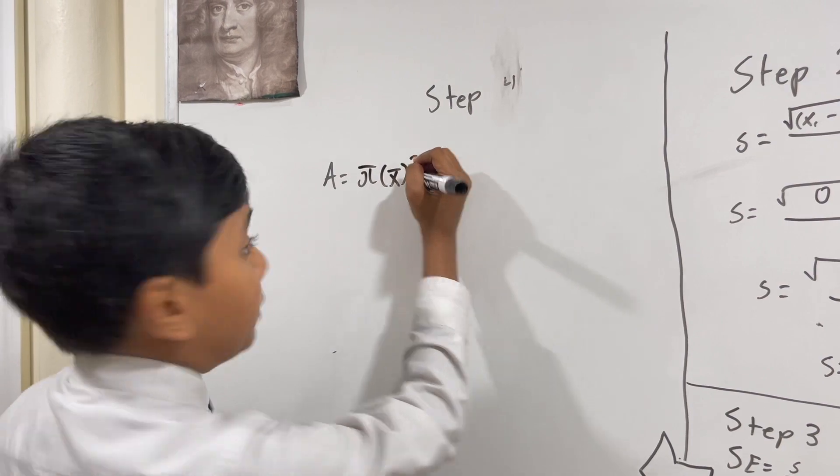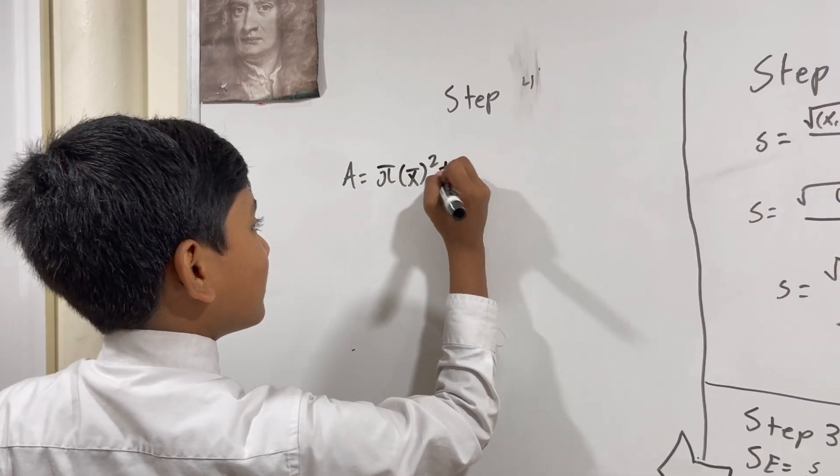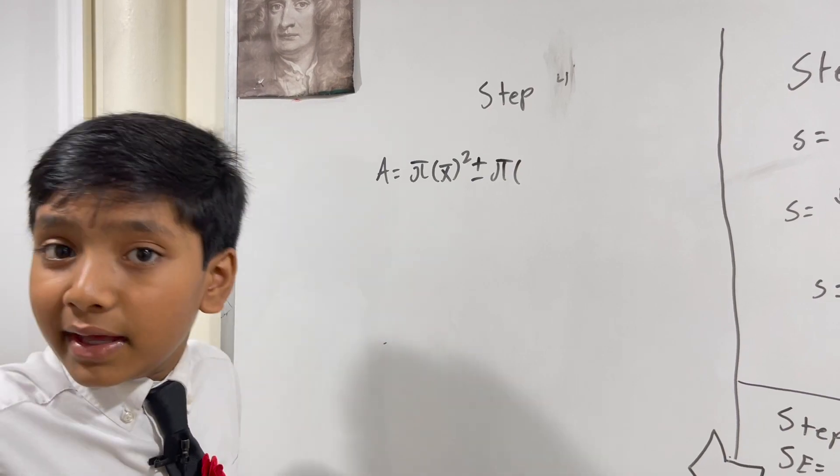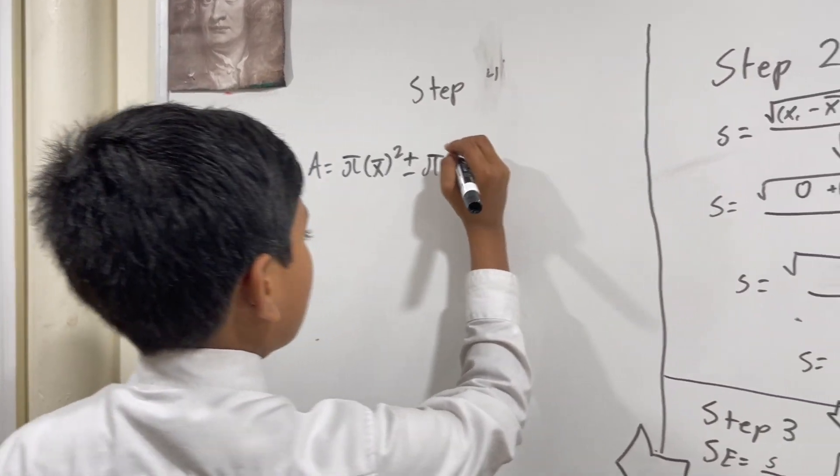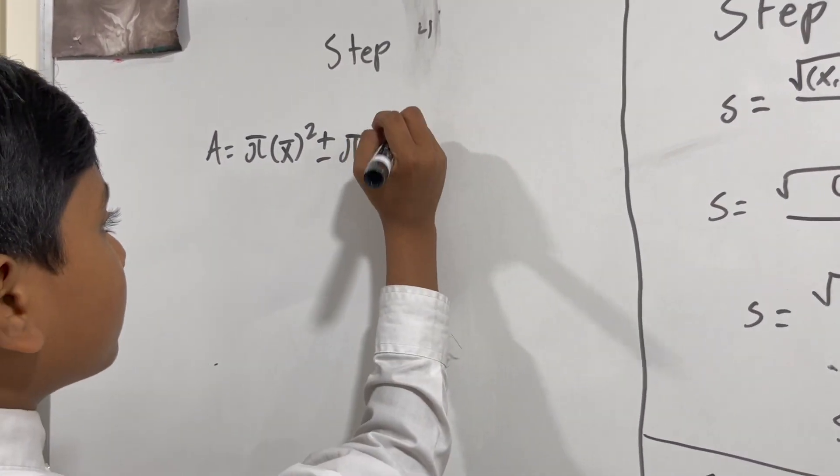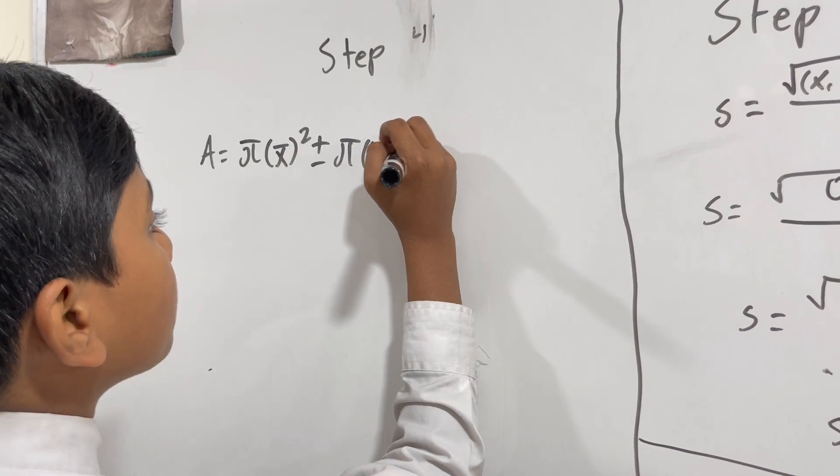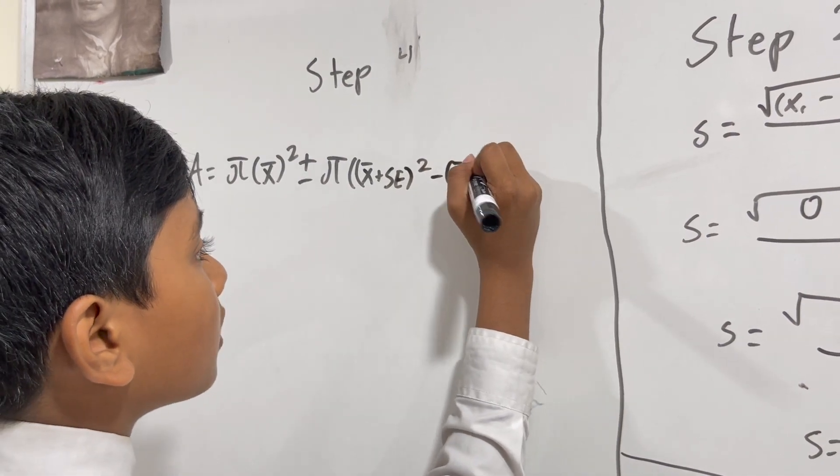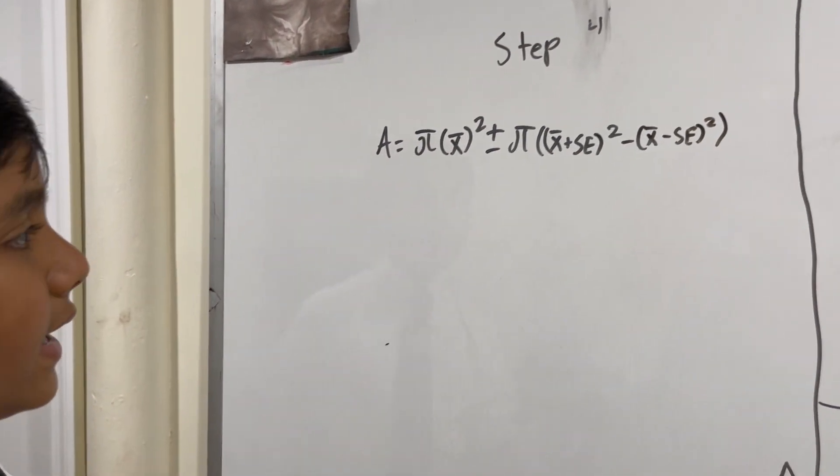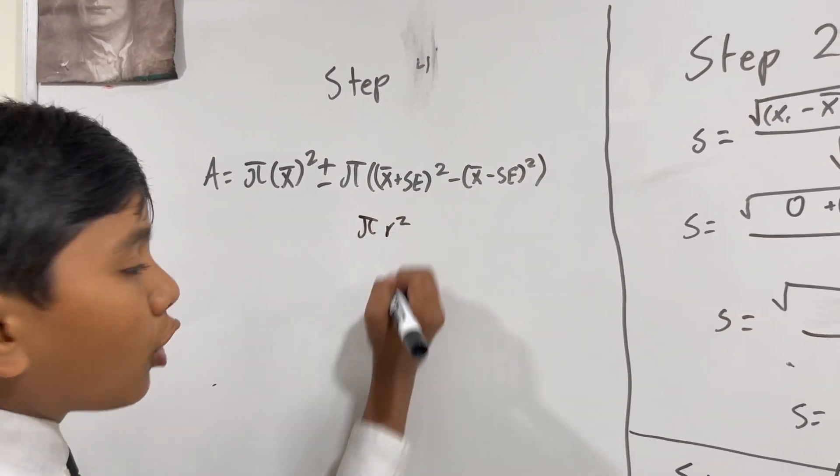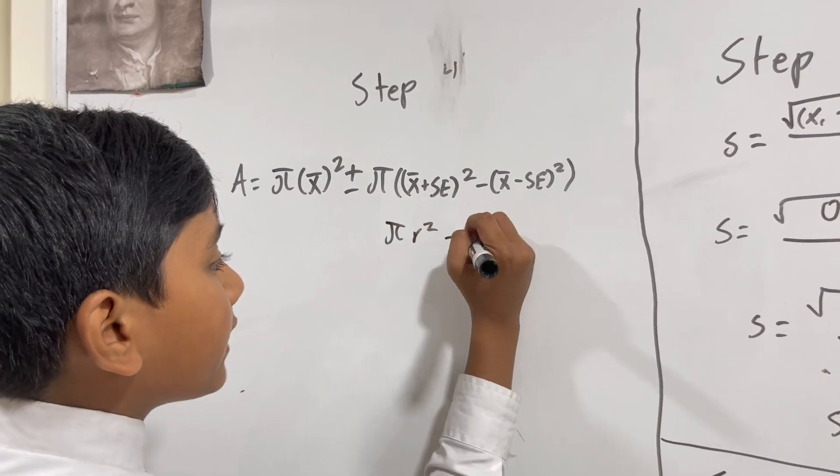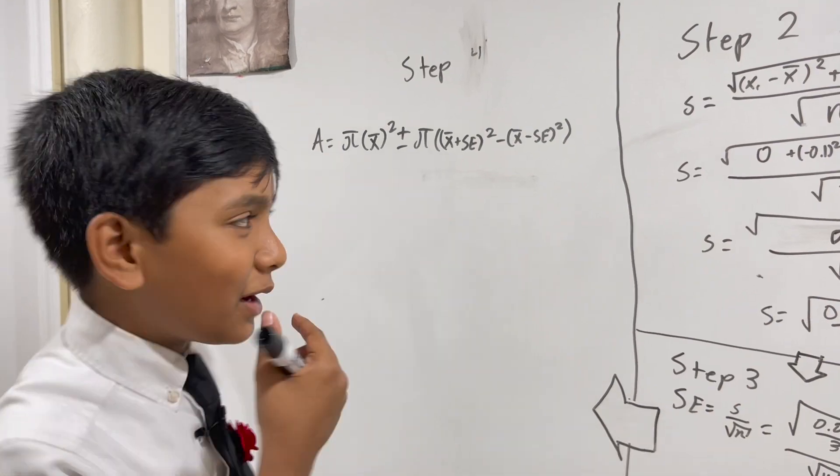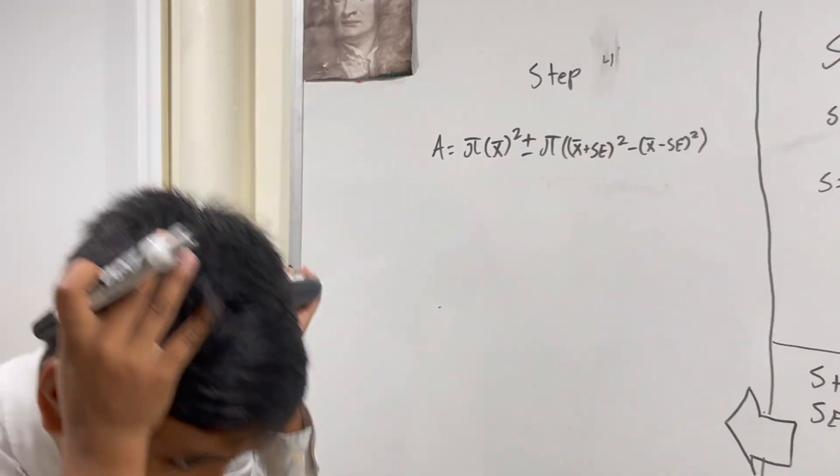Pi x-bar squared - but that's not all. You need to also do this. I'm just factoring out the pi to make sure I don't have to write two pies. So you have pi times (x-bar plus the standard error) squared minus (x-bar minus the standard error) squared. If you don't get this, this is essentially pi times the higher limit for r squared minus pi times the lower limit for r squared.